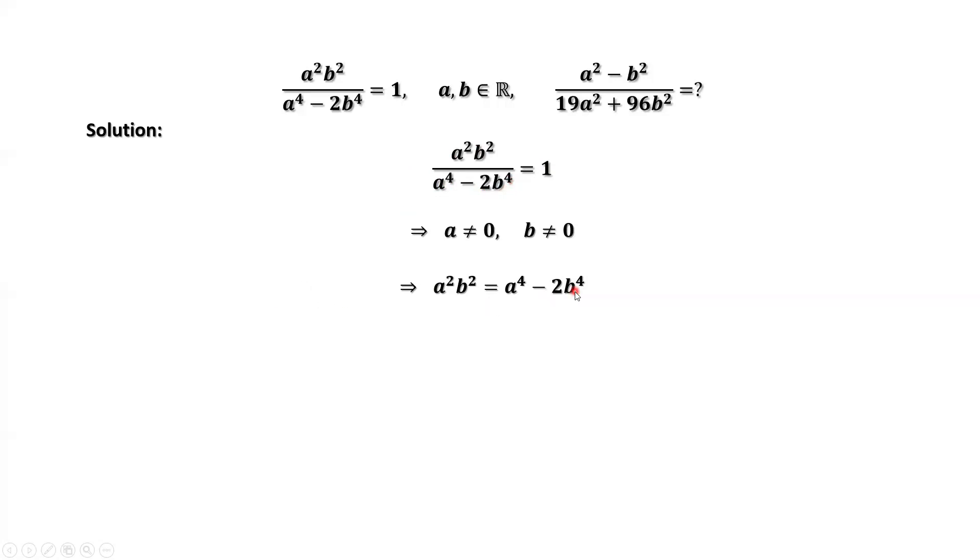Move everything to the left-hand side. Rewrite the left-hand side as the following. Factoring the left-hand side, we have a squared plus b squared times a squared minus 2 times b squared.